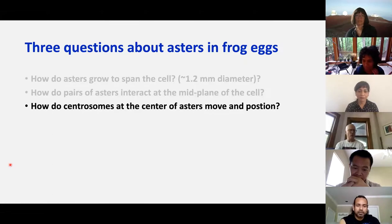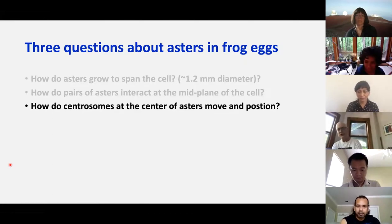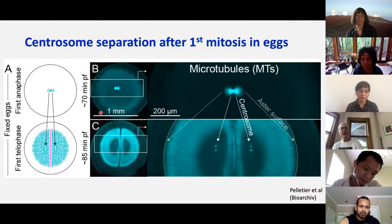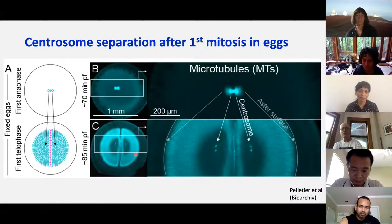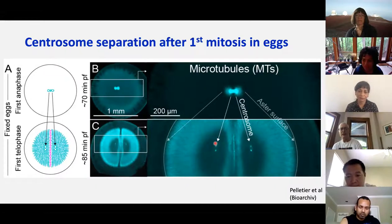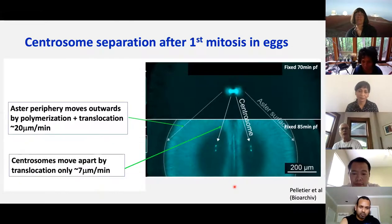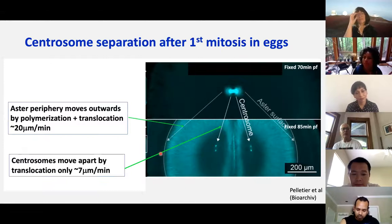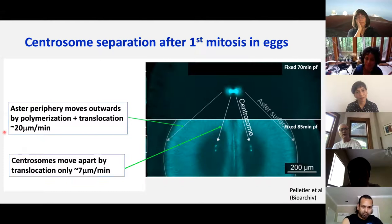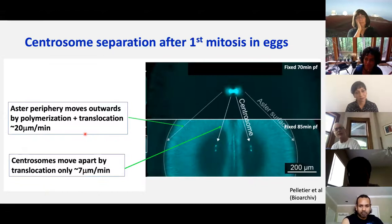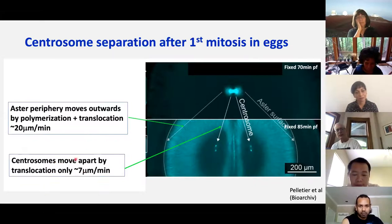Now I want to move to how the asters move and position — particularly the centrosomes at their center. Here at mitosis, and 15 minutes later, the centrosomes have moved apart. They've also split into two pairs with a characteristic angle that we're fascinated by. The aster periphery moves outward by a combination of polymerization and translocation — about 20 microns per minute — whereas the centrosomes move by translocation only, at about a third of that rate.